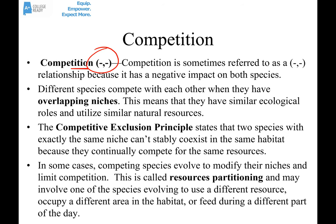The competitive exclusion principle states that two species with exactly the same niche can't stably coexist in the same habitat, because they're continually competing for the same resources and one of those species is going to go extinct eventually. In some cases, competing species evolve to modify their niches, which limits competition.